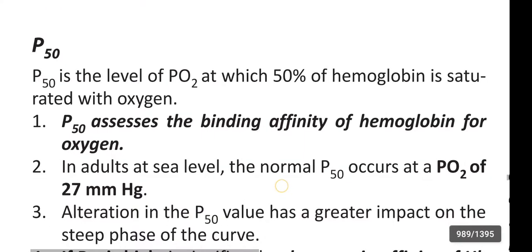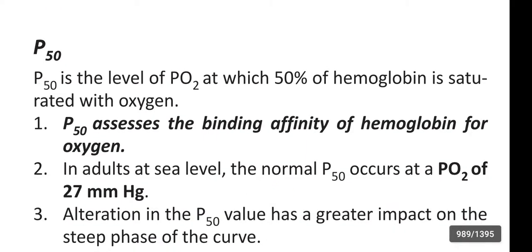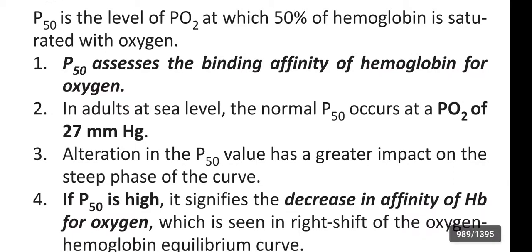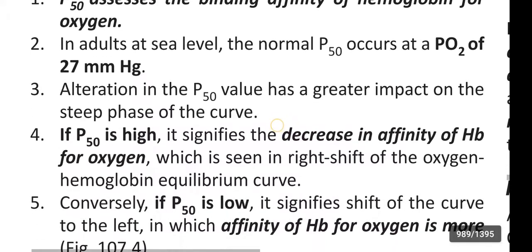What is P50? P50 is the level of partial pressure of oxygen at which 50% of hemoglobin is saturated with oxygen. P50 assesses the binding affinity of hemoglobin for oxygen. In adults at sea level, the normal P50 occurs at a partial pressure of oxygen of 27 mmHg. Alteration in P50 has a greater impact on the steep phase of the curve. If P50 is high, it signifies a decrease in affinity of hemoglobin for oxygen, which is seen in the right shift of the hemoglobin equilibrium curve.